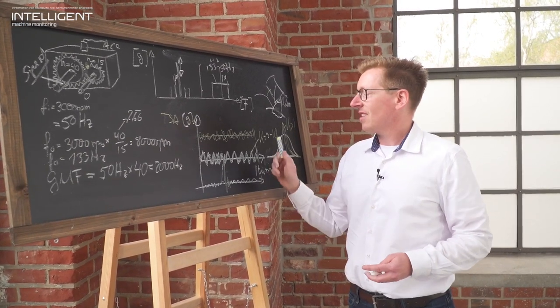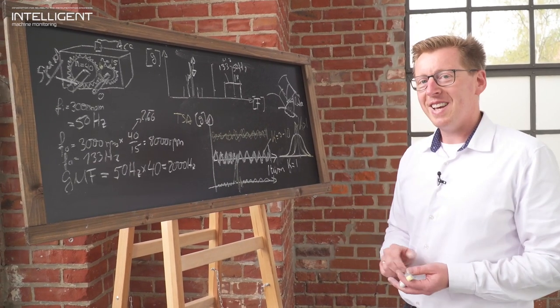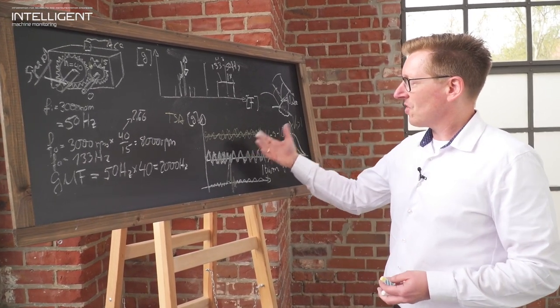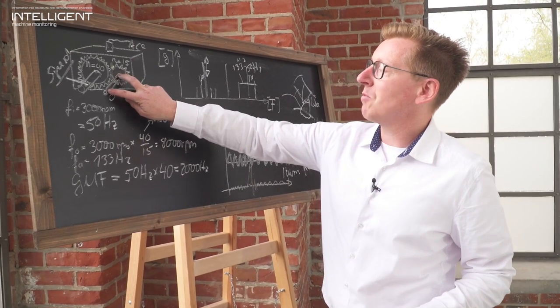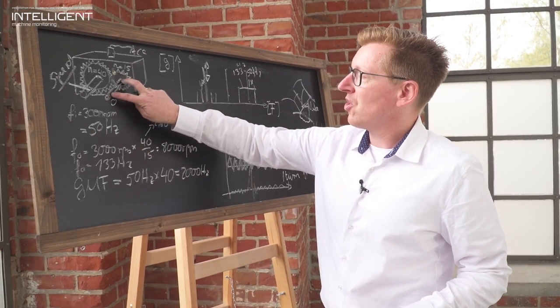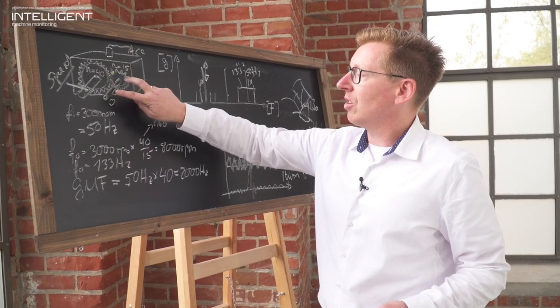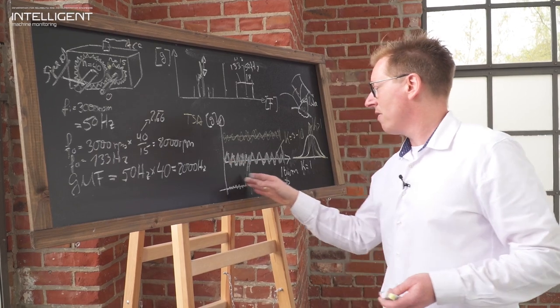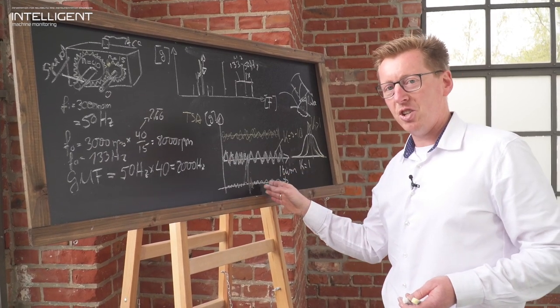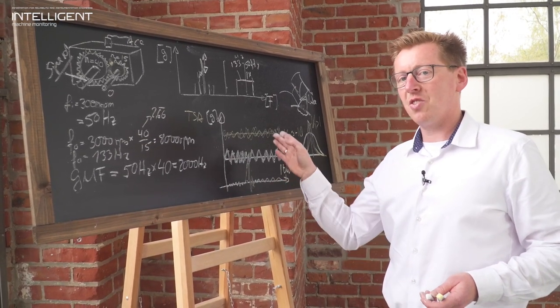Two more comments, two words of caution with the TSA. The kurtosis is sensitive to everything that happens in a synchronous way that is time synchronized to this shaft. If you are driving equipment that also produces synchronous impacting, these will also be visible in the time synchronous averaging, so this needs to be taken into consideration in the baselining.